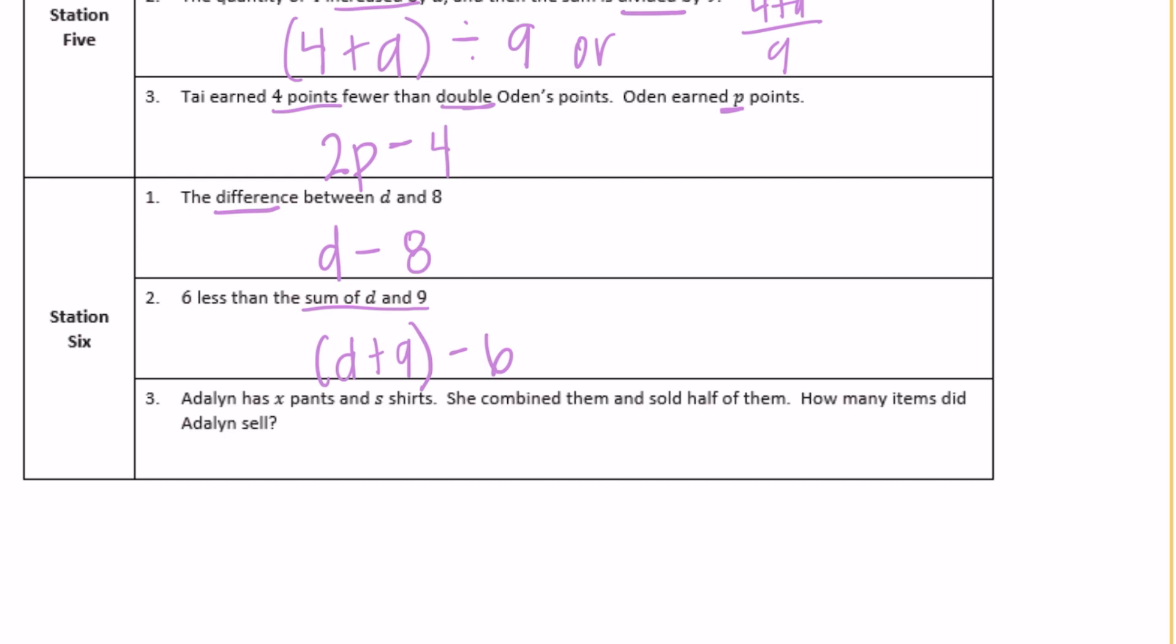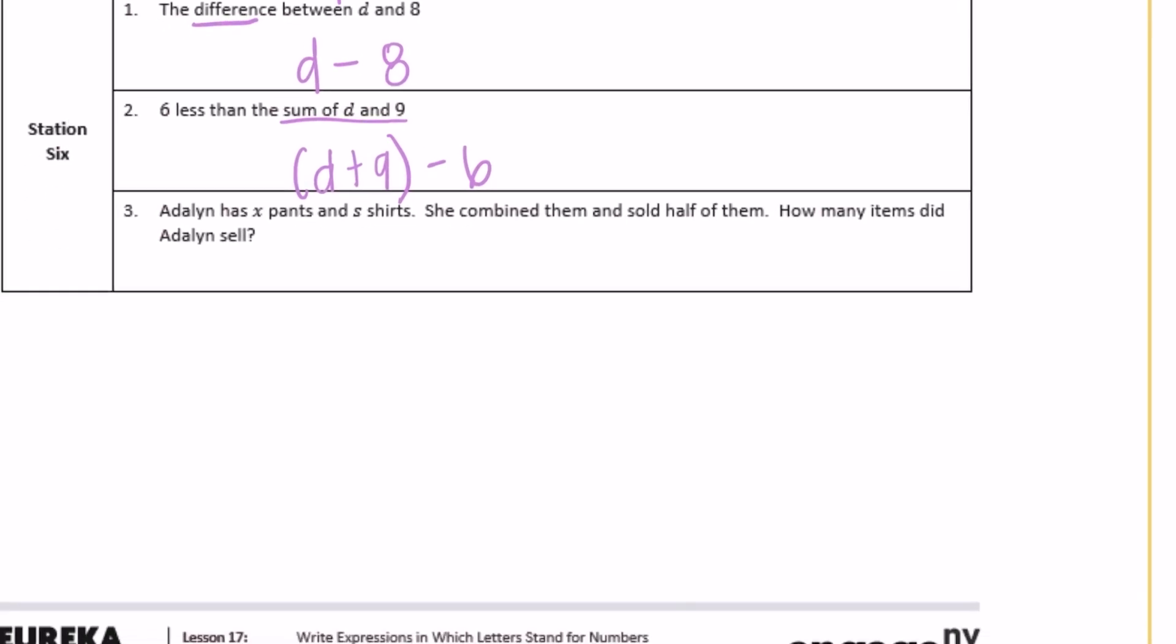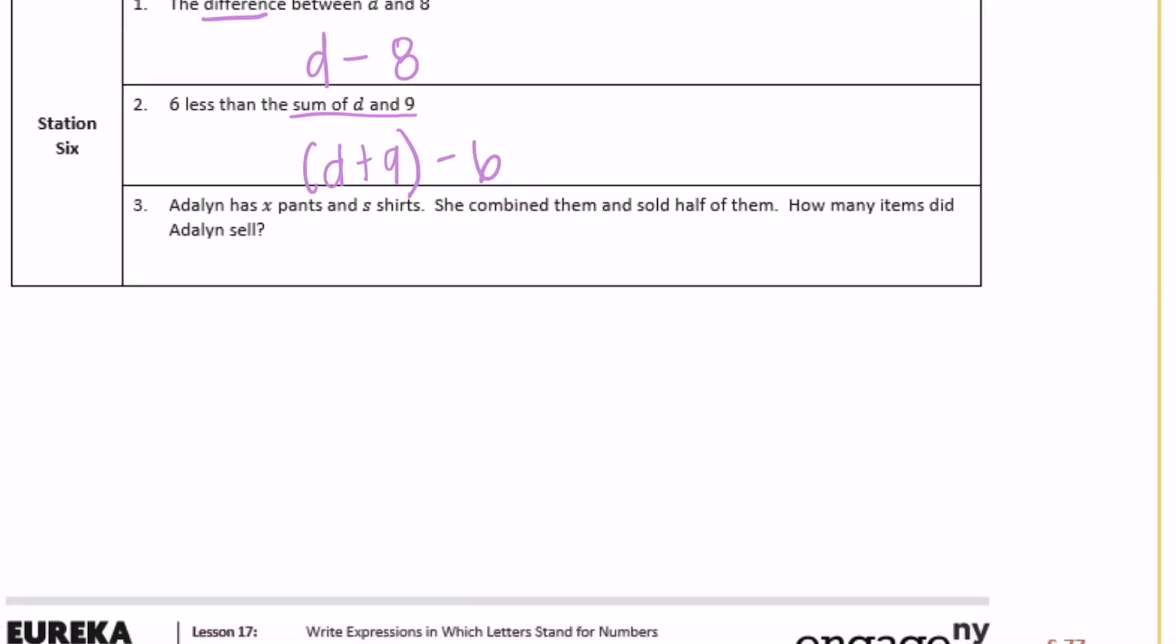Adeline has x pants and s shirts. She combined them and sold half of them. She combines them, x plus s, and then sells half. We could divide that by 2: (x + s) ÷ 2. Or you could find one half of x plus s. You could also write this as (x + s) over 2.